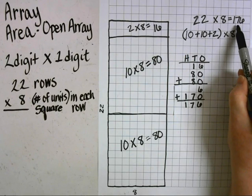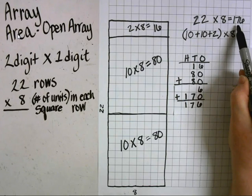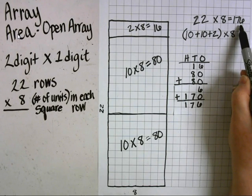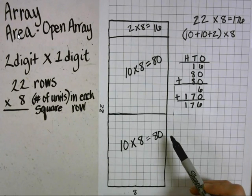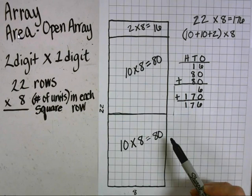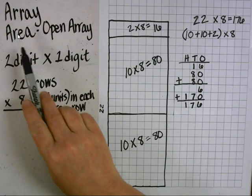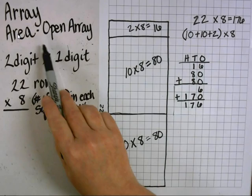So my original problem, 22 times 8, equals 176 square units. The array model is one way to show a 2-digit times 1-digit multiplication problem. Another model you can use is called the area model, or the open array.